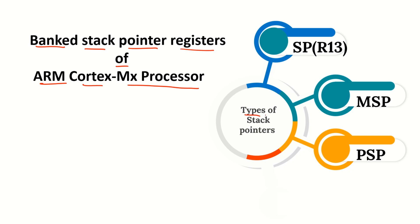There are mainly three types of stack pointers — that means there are three registers for indicating stack pointer operation in Cortex MX processor. The first one is SP, which is nothing but stack pointer, also called CSP — current stack pointer. R13 register is used to hold the SP value; R13 acts as SP and is one of the general purpose core registers. The second stack pointer is MSP — main stack pointer — and the third one is PSP — processor stack pointer.